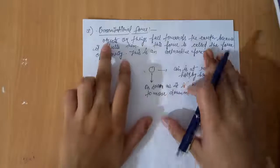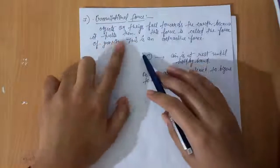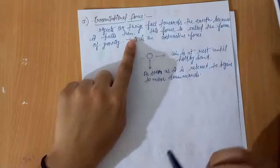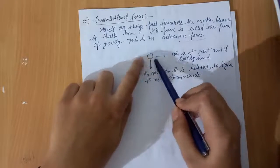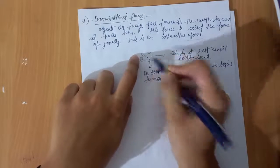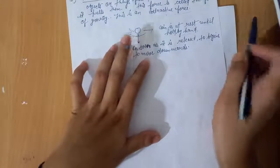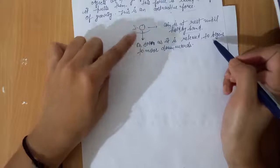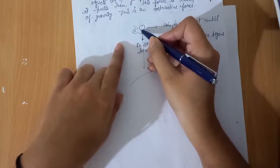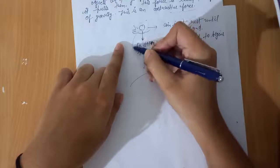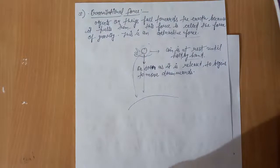Gravitational force: objects or things fall towards the earth because the earth pulls them towards it — this force is called the force of gravity. This coin, held in our hand, begins to move downwards as soon as it is released, because the earth exerts a force on the object due to which objects have a tendency to come downwards. This is gravitational force. I hope you have understood this — thank you.